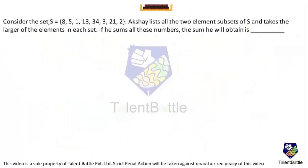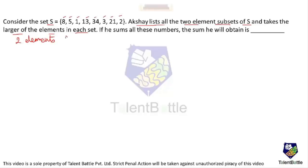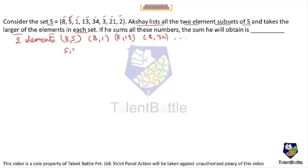Next problem: Consider the set S = {8, 51, 13, 34, 3, 21, 2, 1}. Akshay lists all two-element subsets of S and takes the larger element from each subset. There are 8 elements in S, so he makes all possible two-element subsets — like {8, 5}, {8, 1}, {8, 13} — and takes only the largest number from each. He then sums all these largest numbers.